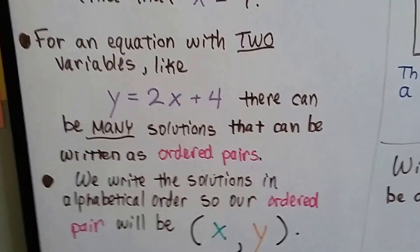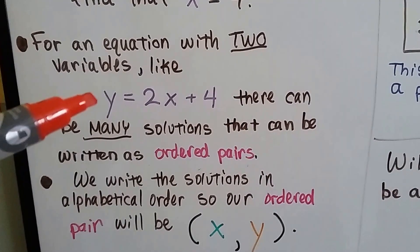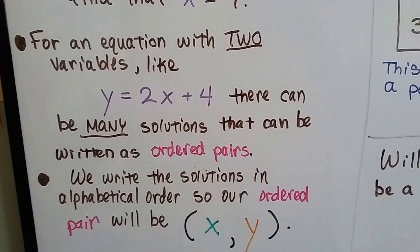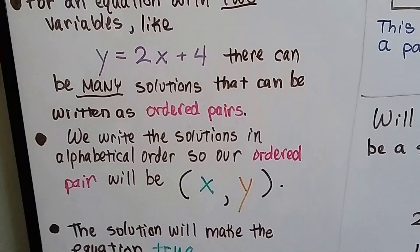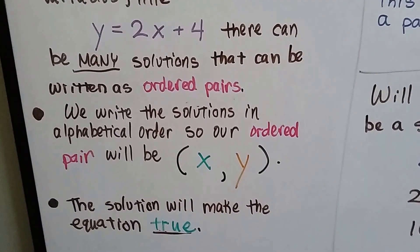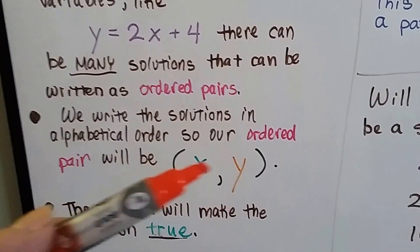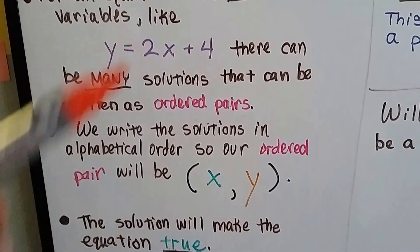Even though this equation has the y first, we know we can rewrite this with the equals y at the back. But the x is always written first in the ordered pair. And the solution to this ordered pair is whatever these numbers are, will make this equation true. So let's try doing this.